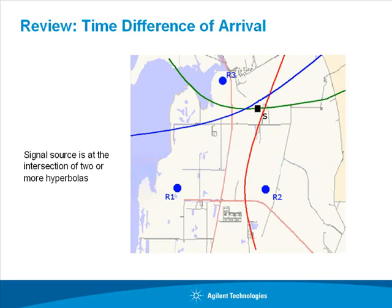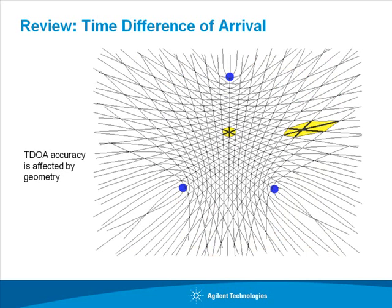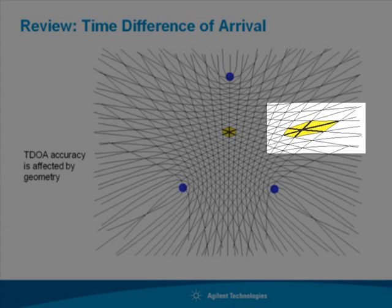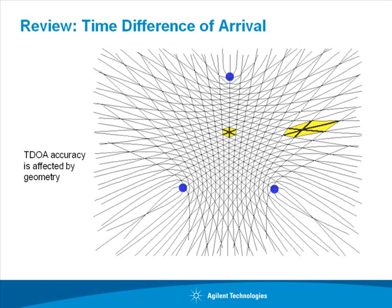If we have three or more receivers, we can locate the signal source by looking at the intersection of two or more hyperbolas. It's important to note that TDOA geolocation accuracy is affected by geometry. Transmitters which are surrounded by receivers can be located more accurately than transmitters outside of the receiver network. At distances far from the receiver network, the lines of constant time difference run nearly parallel, so the TDOA algorithm cannot provide a geolocation, but rather a line of bearing towards the signal.